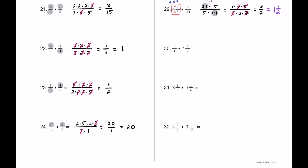For number 30, we have 8 wholes — written as 8 over 1 — multiplied by 4 and 1 half. We convert 4 and 1 half: 4 times 2 plus 1 is 9 over 2. The composite numbers are 8 and 9. 8 breaks into 2 times 2 times 2, and 9 breaks into 3 times 3. On the bottom we have 1 times 2. One pair of 2s cancels, leaving 2 times 2 times 3 times 3 on top, which is 36, over 1 — so the answer is 36.